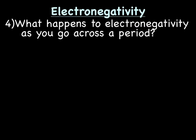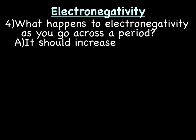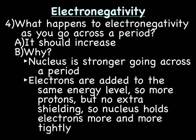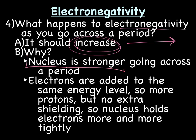Last slide: what happens to electronegativity as you go across the period? Thinking about the power of the nucleus — we need an effectively stronger nucleus to hold on to extra electrons. Electronegativity should increase. Why? The nucleus is stronger going across the period because electrons are added to the same energy level. We're also adding protons, but not shields or energy levels, so the nucleus is effectively stronger. Going across the period, electronegativity will increase because we have an effectively stronger nucleus due to adding protons but not energy levels.